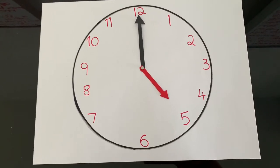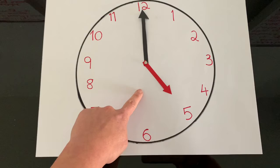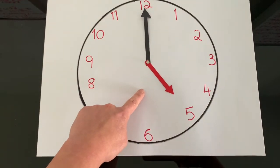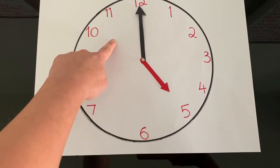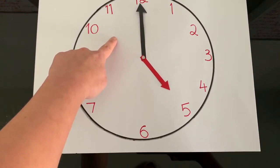Okay, so we're going to do a quick recap because I remember doing this in reception. The short hand, which is the red on the clock, is the hour hand, and the longer hand, which is the black one here, shows us the minutes.